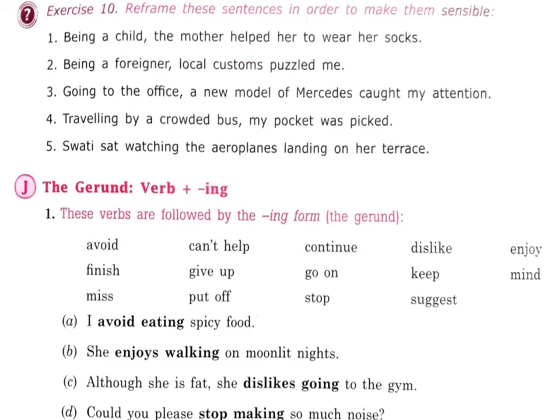Reframe these sentences to make them sensible. 'Being a child, the mother helped her to wear her socks' — corrected: 'Since she was a child, the mother helped her to wear her socks.' 'Being a foreigner, local customs puzzled me' — corrected: 'Since I was a foreigner, local customs puzzled me.' Like this, you will convert the sentences.